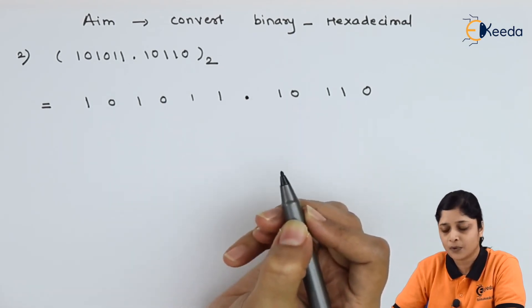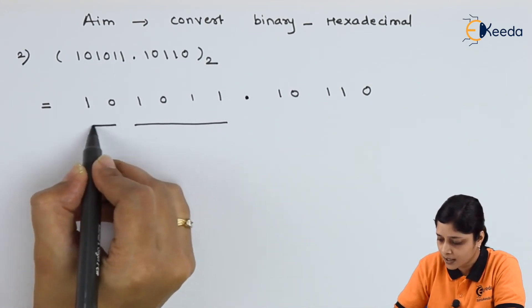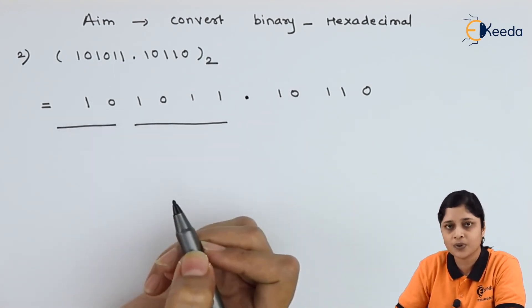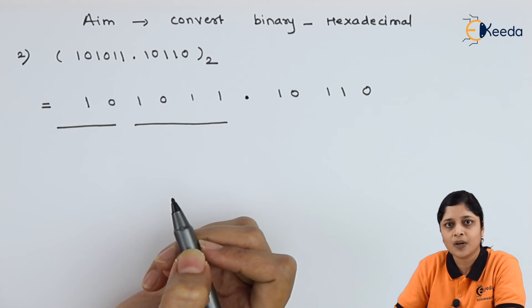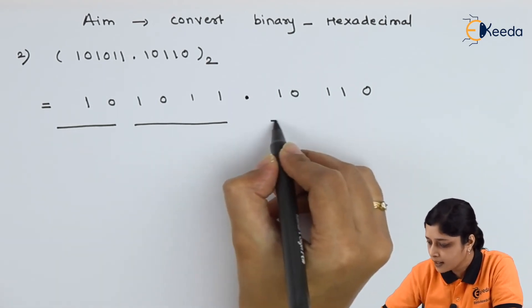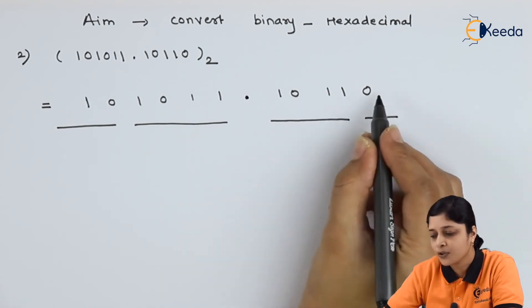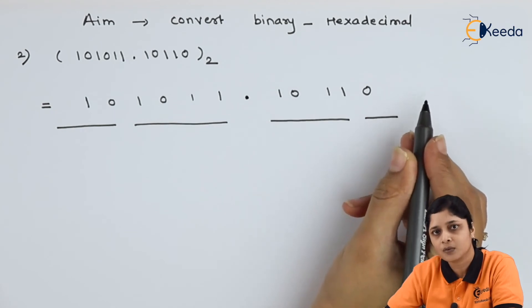You have to make a group of 4 in hexadecimal number system. Focus on decimal point. Start towards the left. Make a group of 4. Start towards the left. Make a group of 4. Here only 2 is here. That's why you have to append 0 in next step. Again make a group of 4. Go right words. Here only 1 0, you have to append 0 to make a group of 4.